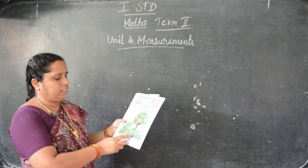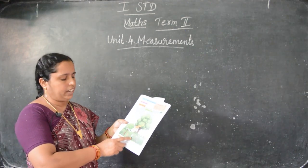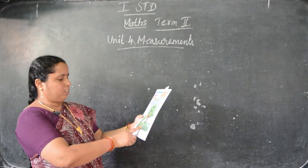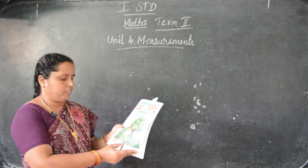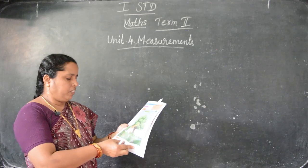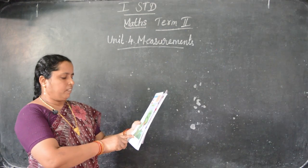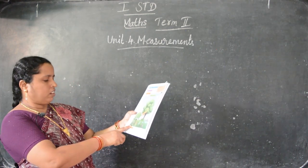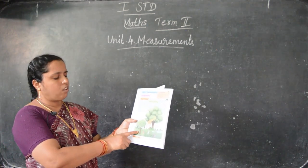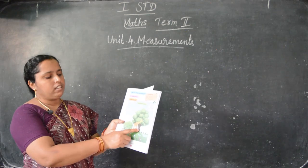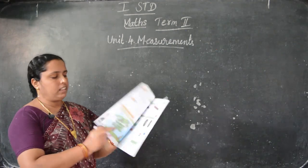This is comparison. Here see, elephant. Elephant is a fat animal. And here see, this is rabbit. This is a thin animal. Here see, this is a snake. Snake is long. Here is another one - this is small, short one. This is long, this is short. This is tall, this is short. This is also tall, this is short. In your book page number 39.